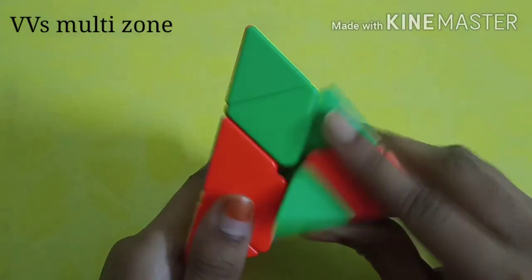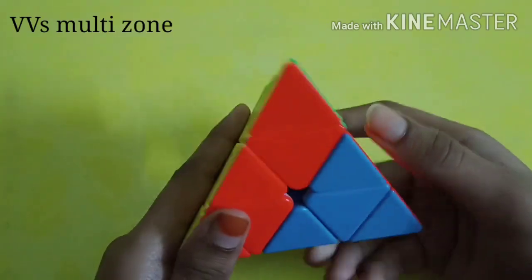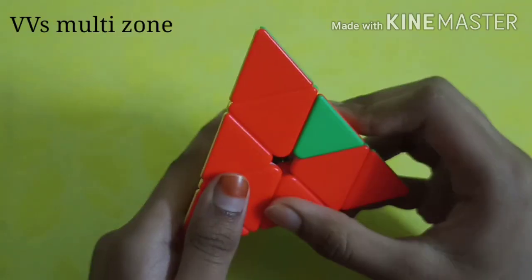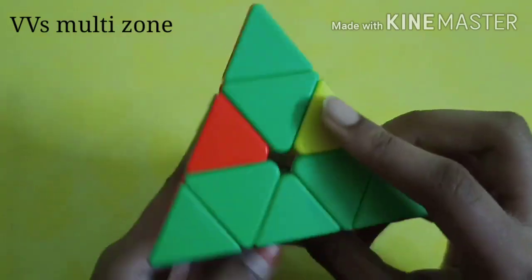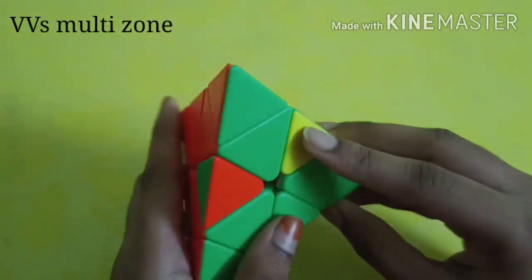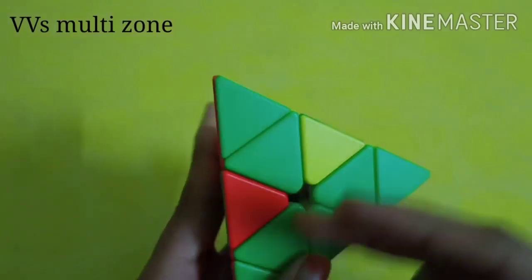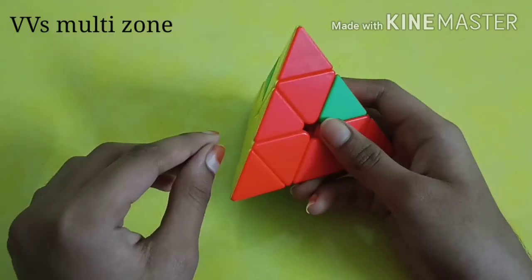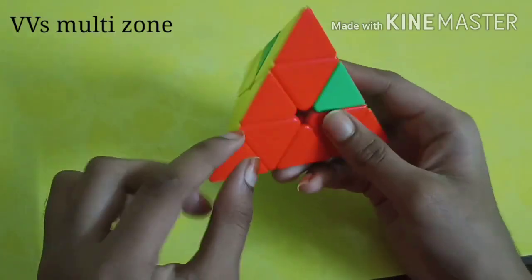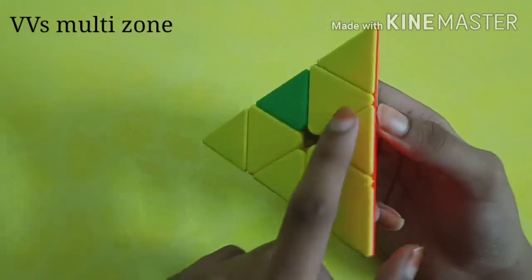You have to do right, up inverse, right inverse, up inverse, right inverse, up inverse, and right. You can see blue is undisturbed and you got from here to here the two colors which are not solved.